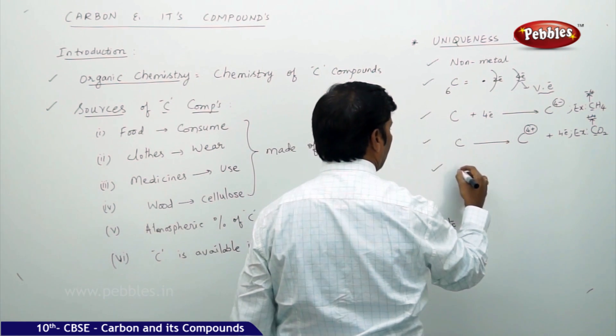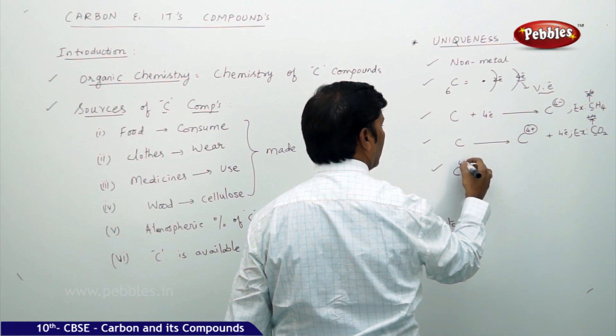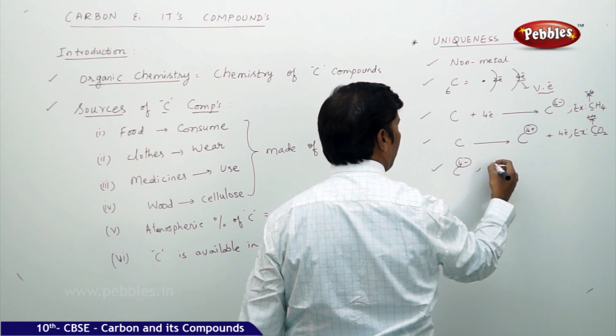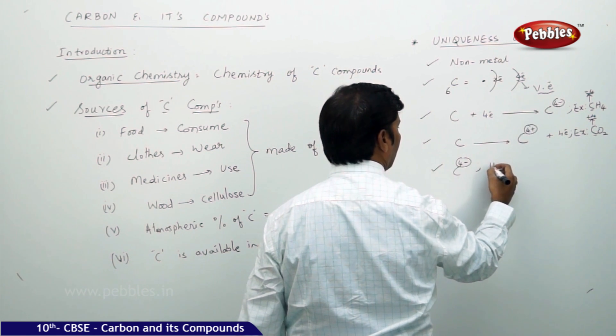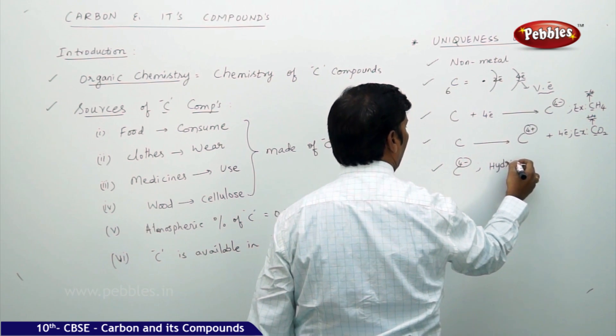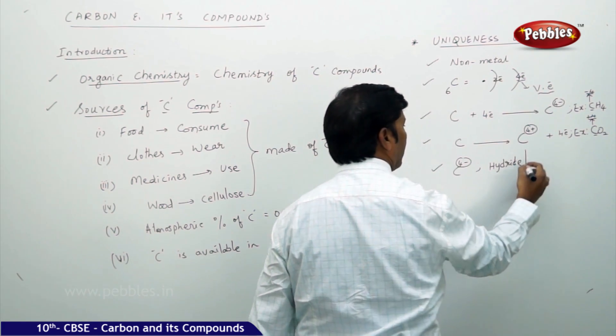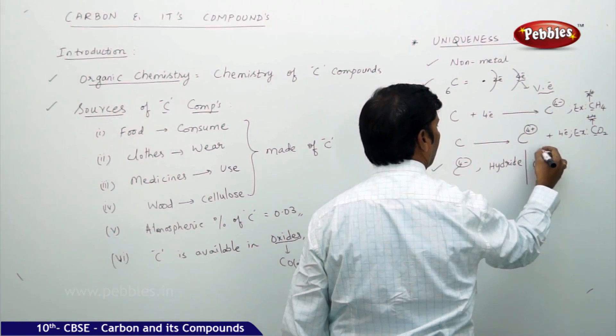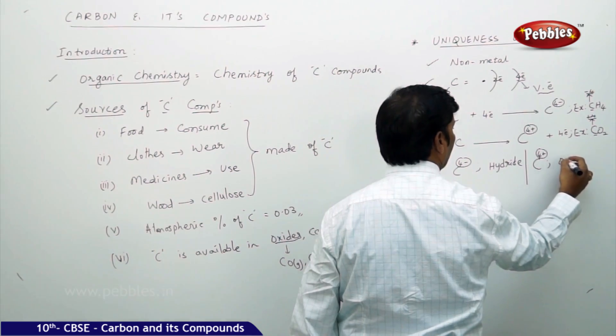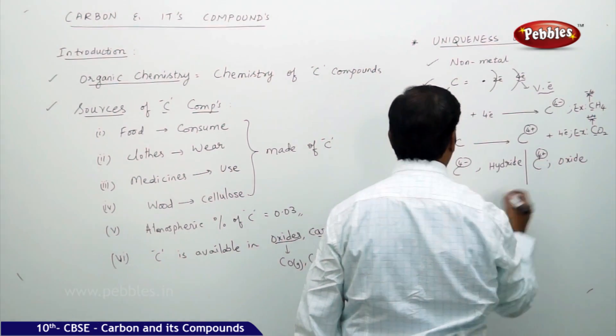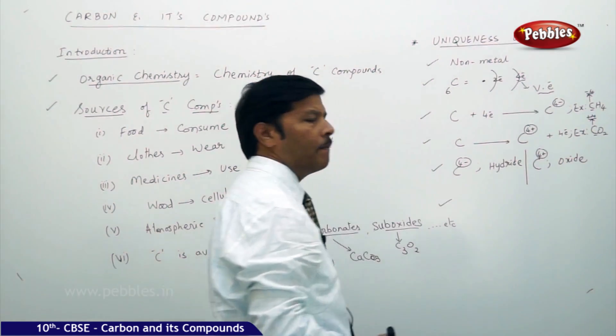C4− means carbon exists in the form of hydride, and C4+ means carbon exists in the form of oxide.